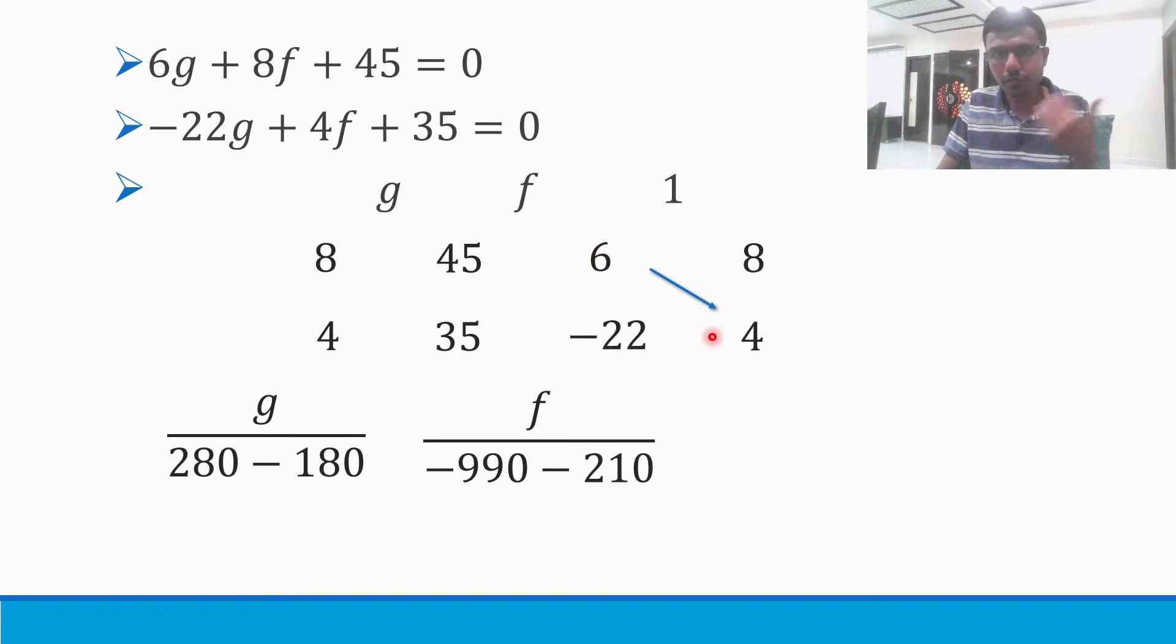Now next, 1 divided by 6 × 4 is 24, 24 minus 22 × 8.